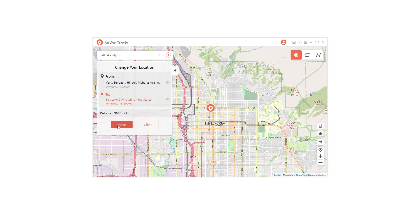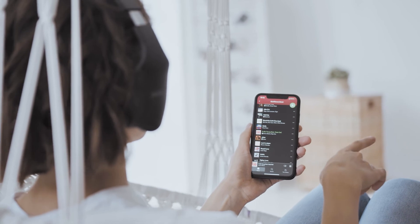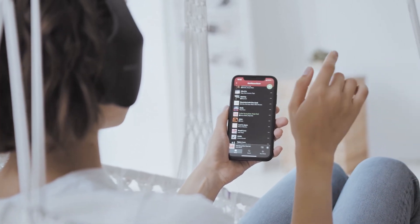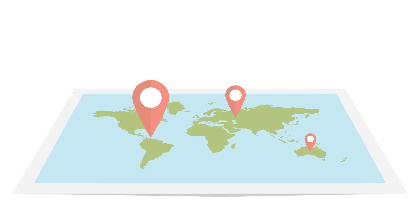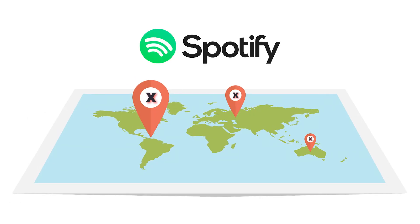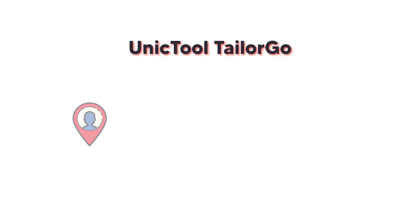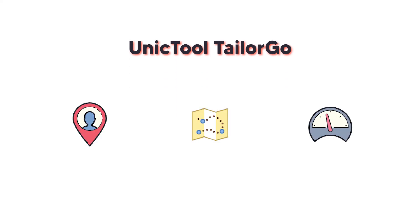Now, Spotify will see your fake location instead of the real location, and you will be able to view contents available in the location set by Taylor Go. In this video, we've learned how to spoof your location on Spotify. Unique Tool Taylor Go can mark your location, set a customized route, or simulate your speed of movement as you would set it.